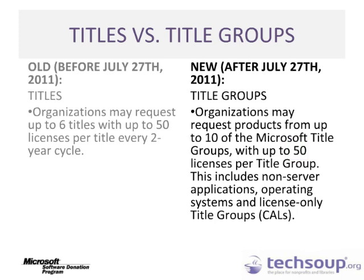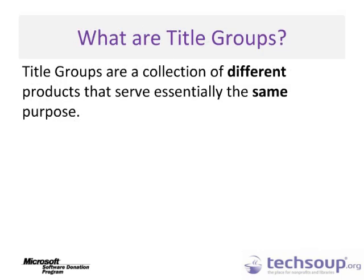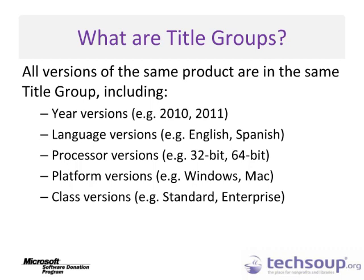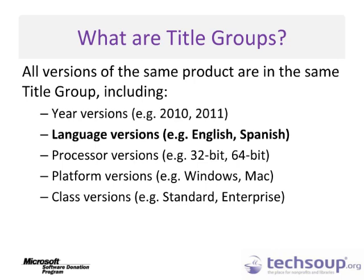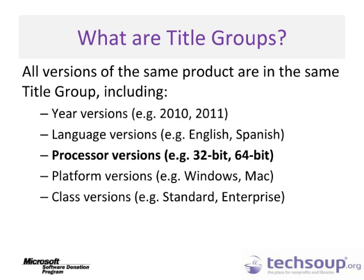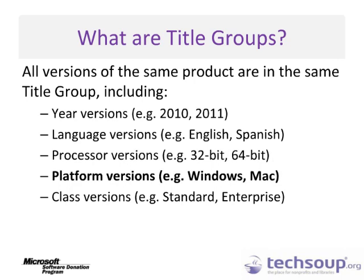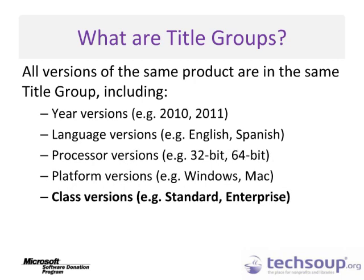This includes non-server applications, operating systems, and license-only Title Groups. Title Groups are a collection of different products that serve essentially the same purpose. All versions of the same product are in the same Title Group, including Year Versions, Language Versions, Processor Versions, Platform Versions, and Class Versions.